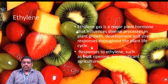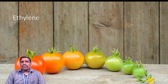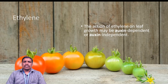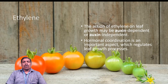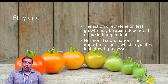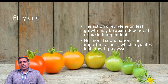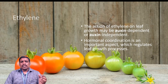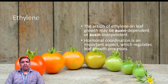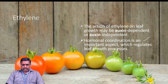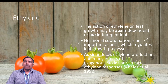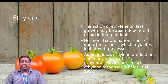Ethylene gas is a major plant hormone that influences diverse processes in plant growth and development during stressful conditions throughout the plant life cycle. Responses to ethylene such as fruit ripening are significant to agriculture. Senescence involves the ripening of fruit, and ethylene also helps in the process of plant growth. The action of ethylene, especially on leaves, may be oxygen-dependent or oxygen-independent, meaning ethylene can have a direct effect upon leaf growth with or without oxygen. Hormonal coordination is an important aspect that regulates leaf growth and this process.